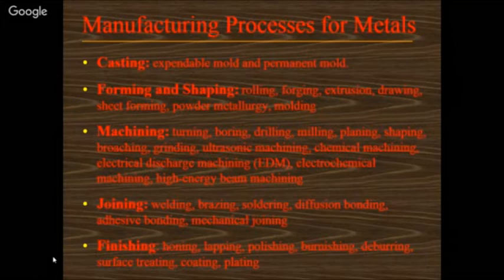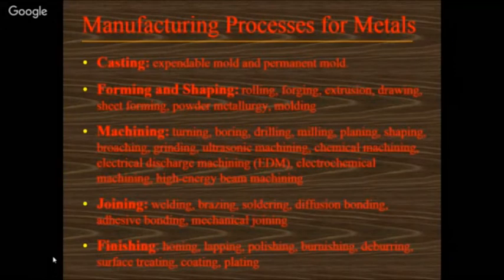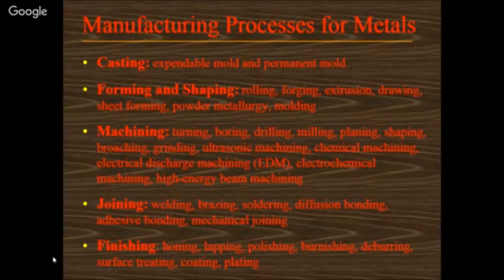Joining processes include welding, brazing, soldering, diffusion bonding, adhesive bonding, and mechanical joining, including RPT. After that, the final manufacturing process is finishing — giving super finishing to products like honing, lapping, polishing, burnishing, and deburring. These are the various techniques used for the finishing process.